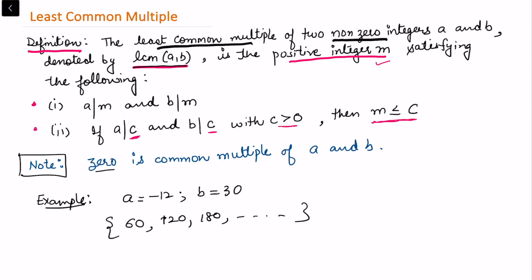And here you can see that the least is 60, so we can say that the least common multiple of a and b is equal to 60.